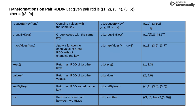groupByKey groups values with the same key. Without applying any custom function, it just groups the values. In contrast, when I use groupByKey with custom logic I can do average, addition, subtraction, and whatever. So ra.groupByKey will group all values with similar keys — for key 3, you get a group of 4 and 6; for key 1, you get 2.